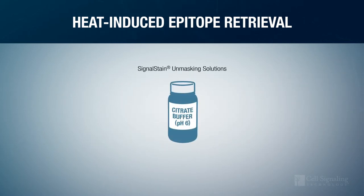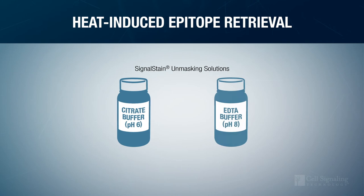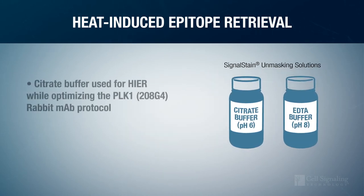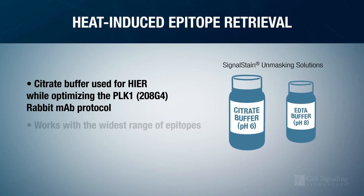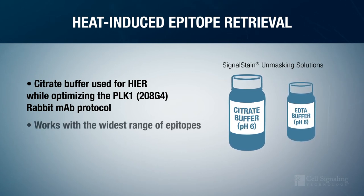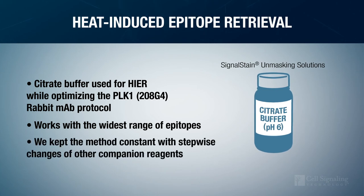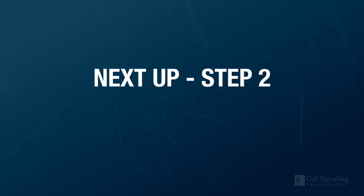The slightly acidic buffer citrate is effective at unmasking a wide range of epitopes, but some may require a more basic buffer, like EDTA. We used citrate buffer for heat-induced epitope retrieval while optimizing the PLK-RABIT-MAB protocol because it works for the widest range of epitopes. We kept this method constant as we did a stepwise change of the other companion reagents. Coming up next: Step 2.